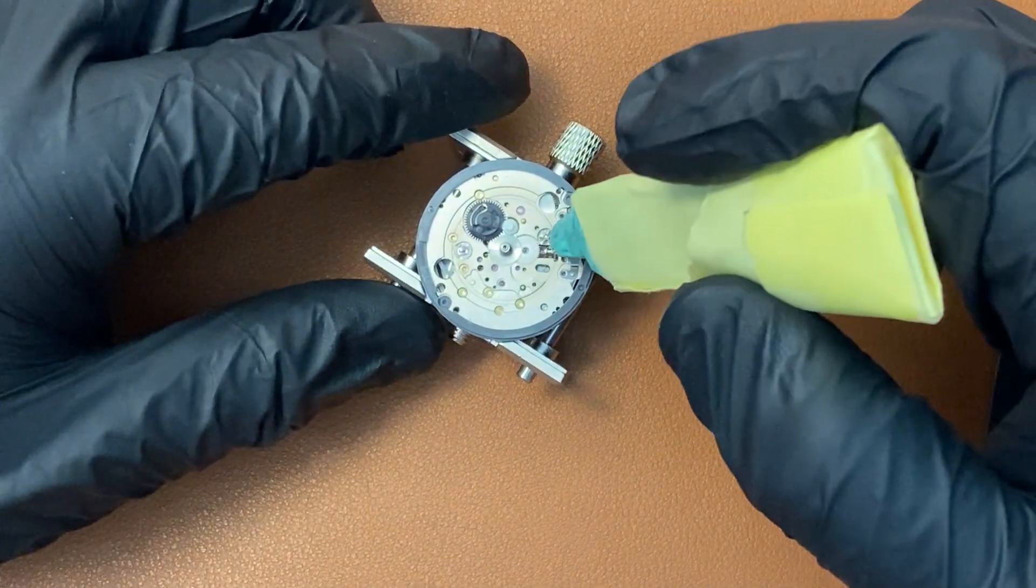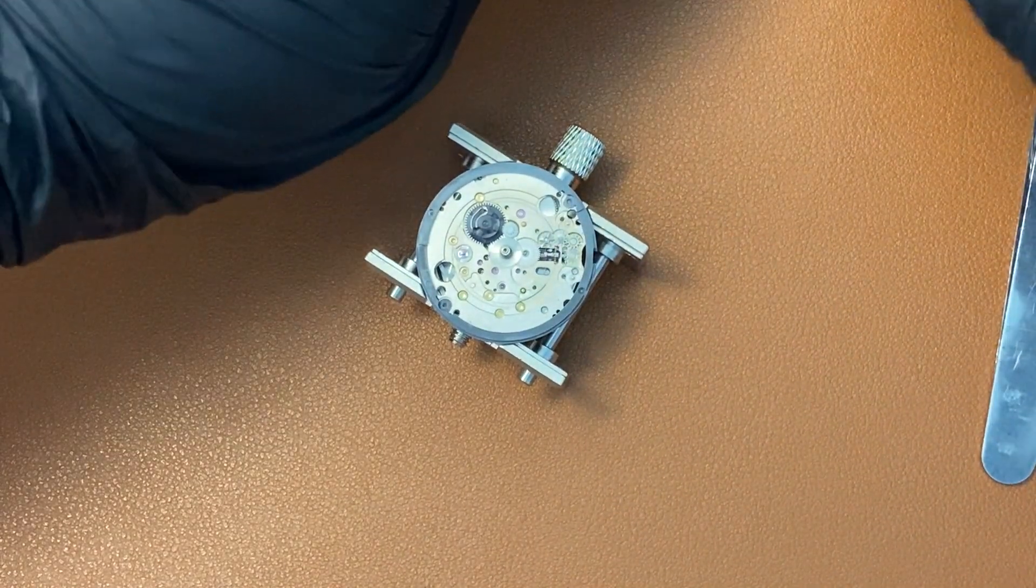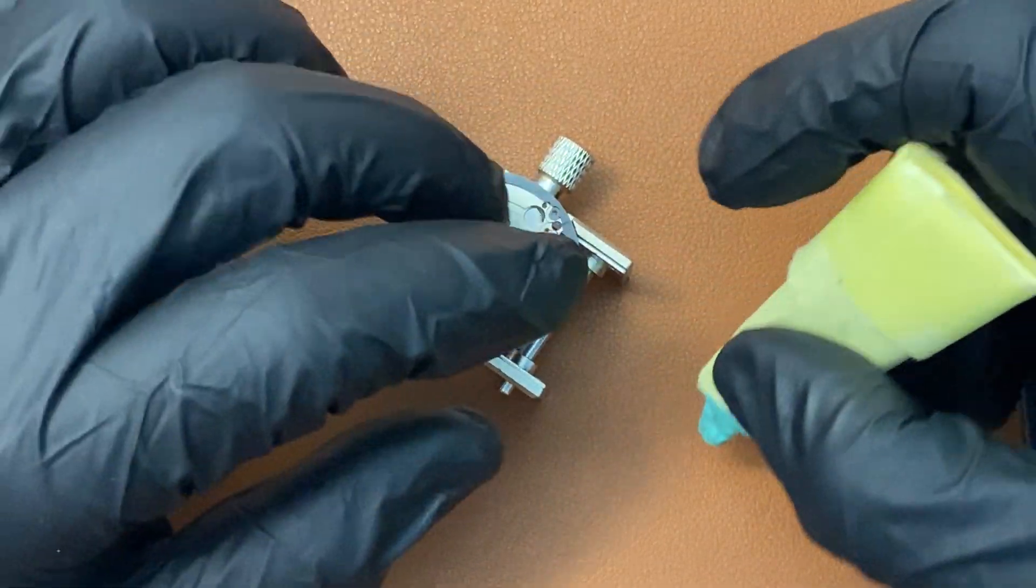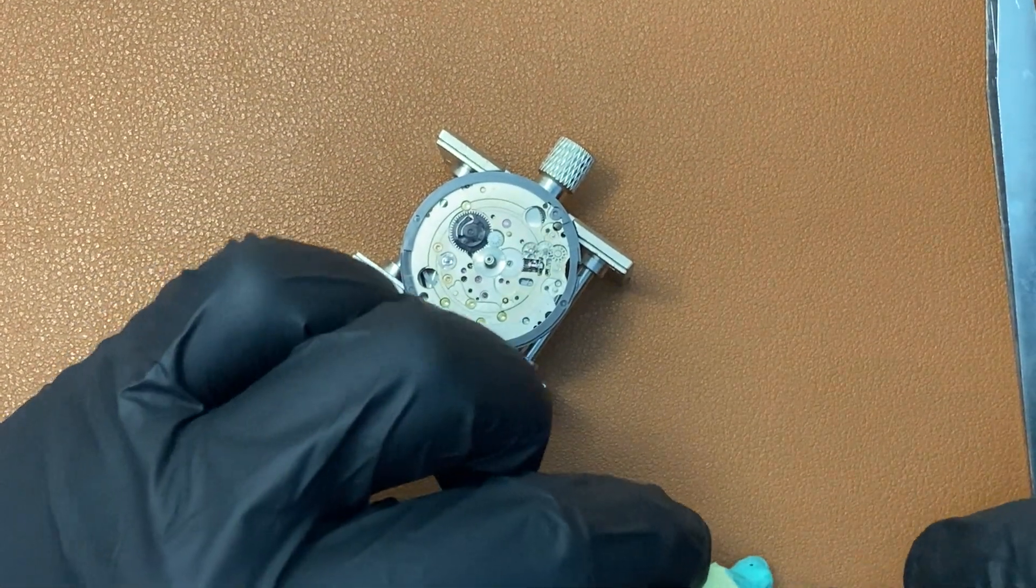You can use the rodico to stick the metal part out, and now the gears are fully exposed. So use the rodico to stick the gears out.